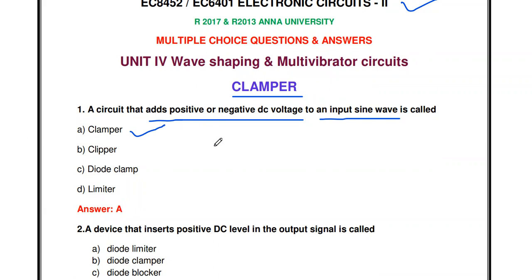In a clipper, there are two types — positive and negative. If the positive half cycle is clipped, it is a positive clipper; if the negative half cycle is clipped, it is a negative clipper. Similarly, a circuit used to add a DC component to an AC signal is called a clamper. The clamper shifts the entire sine wave above or below a reference voltage without changing the shape of the waveform.